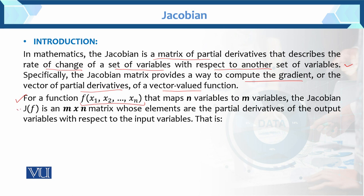The Jacobian J of f is an m into n matrix. Aab, kitni aapke paas n dimensions hai, yahan par m into n matrix banega. Whose elements are the partial derivatives of the output variable with respect to the input variable. Yarni, haam isme variable art karke uska Jacobian ya partial derivative le rahe hai.